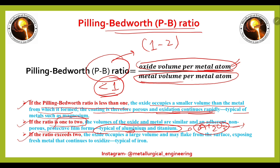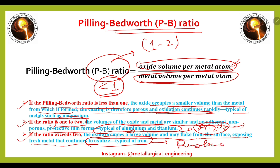If the Pilling-Bedworth ratio exceeds 2, the oxide occupies a large volume and may flake from the surface, exposing fresh metal that continues to oxidize. This is typical of iron — as seen in rusting — where the ratio is greater than 2.